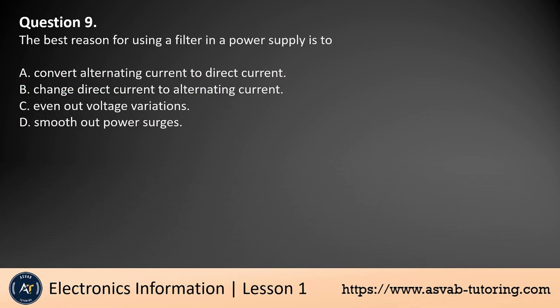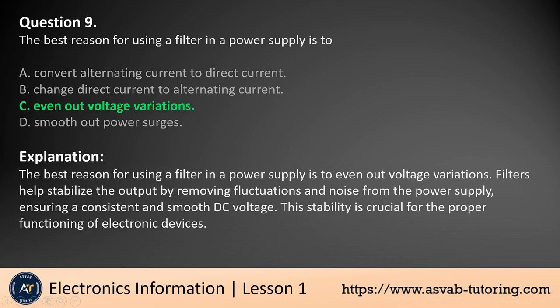Question 9. The best reason for using a filter in a power supply is to: a. Convert alternating current to direct current, b. Change direct current to alternating current, c. Even out voltage variations, d. Smooth out power surges. The answer is c. The best reason for using a filter in a power supply is to even out voltage variations. Filters help stabilize the output by removing fluctuations and noise from the power supply, ensuring a consistent and smooth DC voltage. This stability is crucial for the proper functioning of electronic devices.